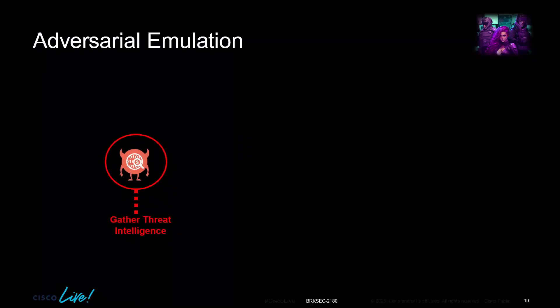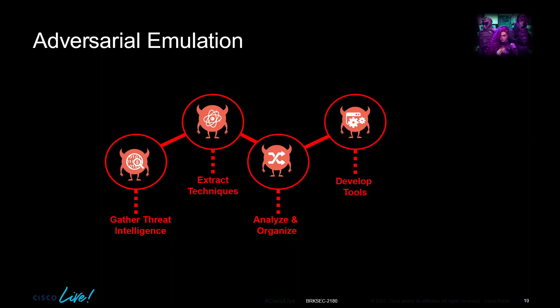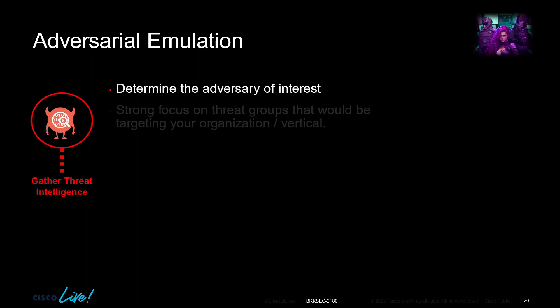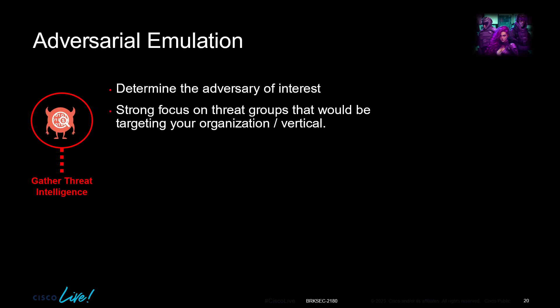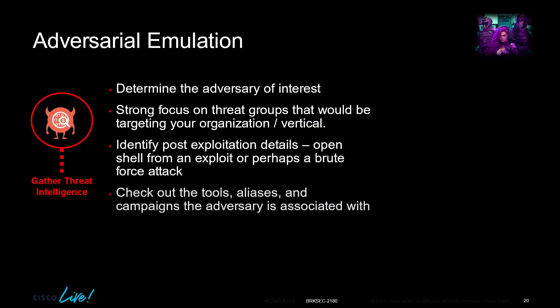When we get into adversarial emulation, we need to gather threat intelligence, extract the techniques, analyze and organize them, and develop the tooling to drive toward that outcome. When gathering threat intelligence, we want to determine the adversary of interest — who's targeting us — identify any post-exploitation details such as whether they open a shell from an exploit or use brute force, check out any tooling, aliases, or other campaigns the adversary is associated with, and determine the time frame for execution.